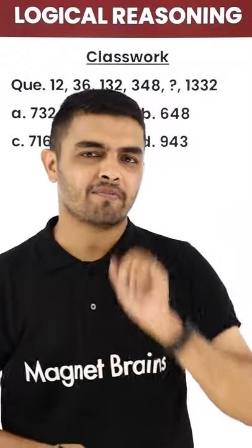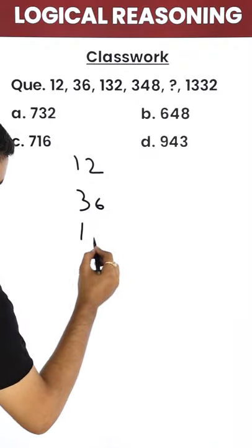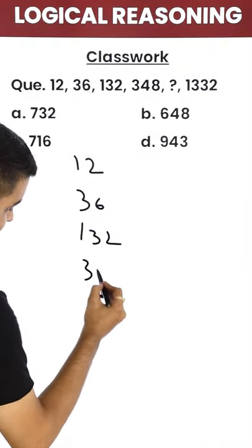Logical reasoning in 30 seconds with Magnet Brains. Check the question out: 12, 36, 132, 348 and there is a blank.